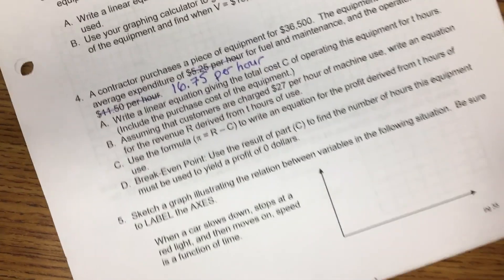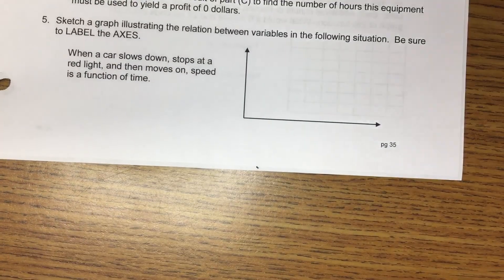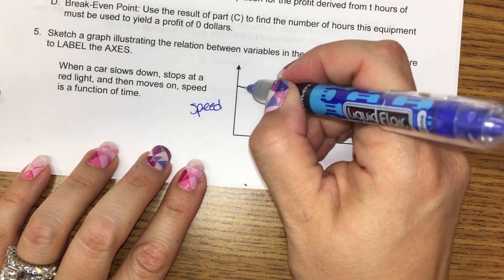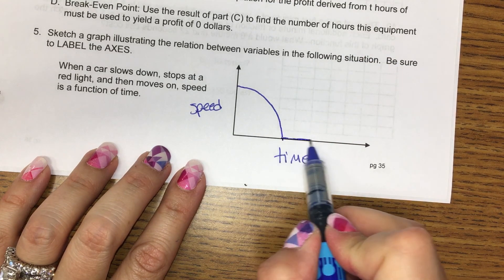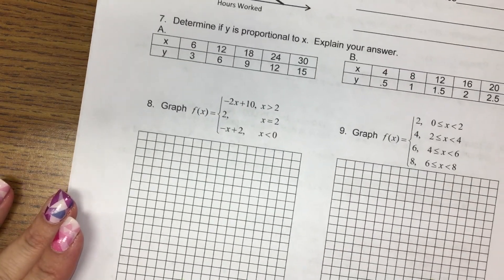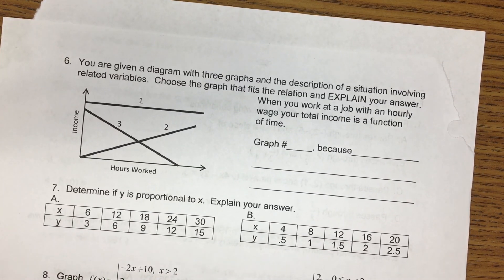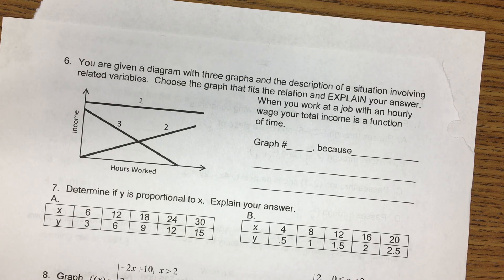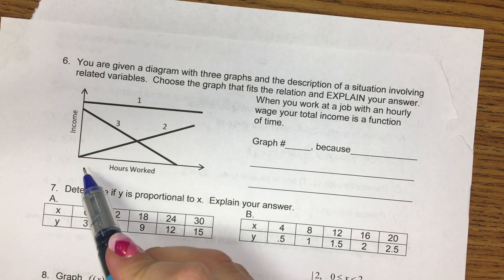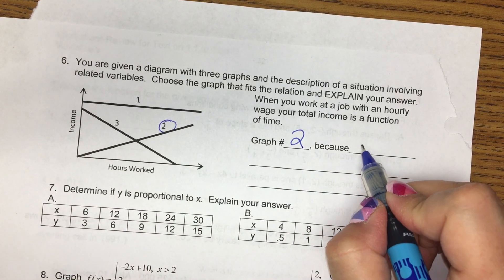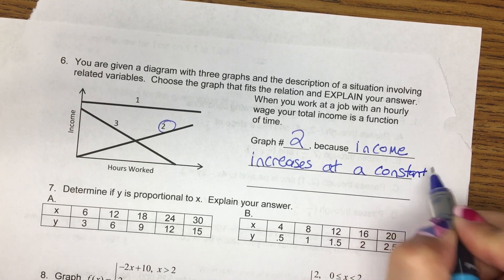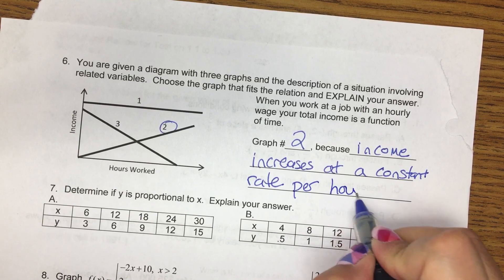Okay, for five. Oops, sorry, there's no earthquake. We want to sketch a graph. All right, I'll do it on my paper here. We have time and speed. So the car is driving along and slows down and it's stopped at a red light and then it starts driving again. All right, the back. I'll do six on the here too. You are given a diagram with three graphs. When you work at a job with an hourly wage, your income is a function of time. Okay, so let's say if I get $10 per hour, as the hours go on, my money goes up. So that's graph two, because income increases at a constant rate per hours worked.